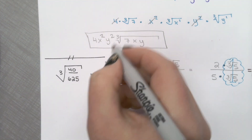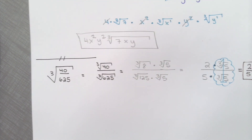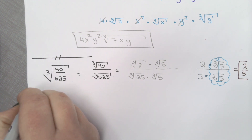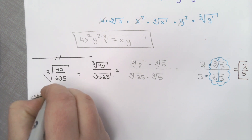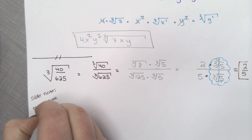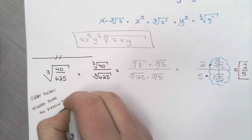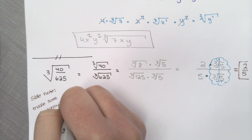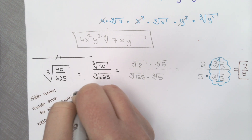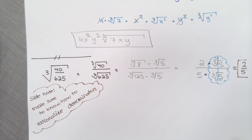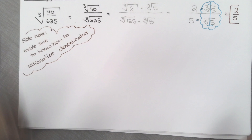Make sure you know how to rationalize the denominators — that will come up. So just because this one worked out pretty doesn't mean the other ones will. Moving on to the next one. Speaking of rationalizing the denominator, let's rationalize the denominator.